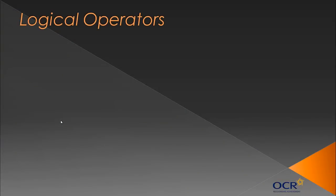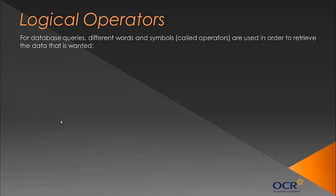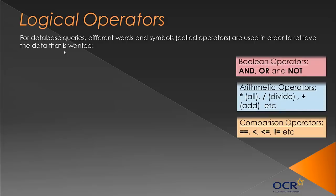We're going to look at queries in slightly more detail, in terms of logical operators and how we frame database queries. Different words and symbols called operators are used in order to retrieve data that's wanted. They help make the queries more specific so you get exactly what you want. We're talking about operators in three different types: Boolean operators (AND, OR, NOT), arithmetic operators, and comparison operators.